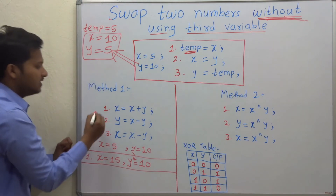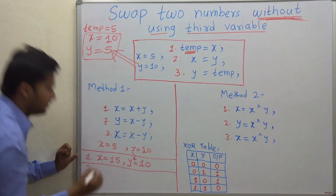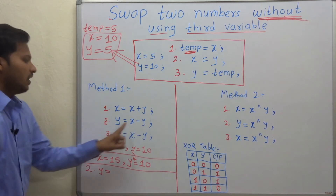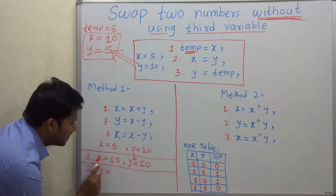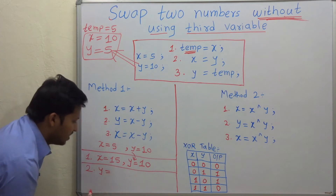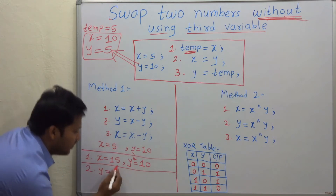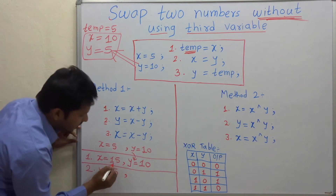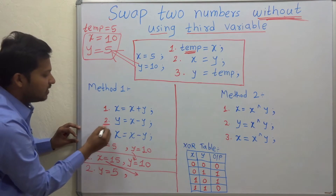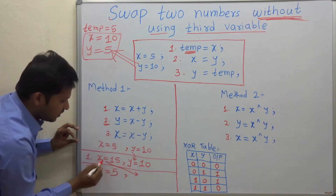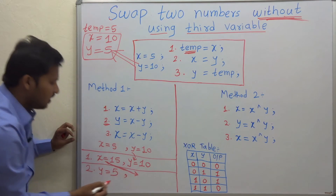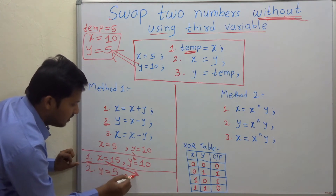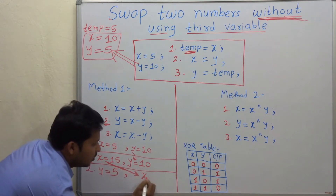Now let's execute the second statement: y is equal to x minus y. The latest values of x and y are 15 and 10 respectively. So x minus y means 15 minus 10, so the value of y is now 5. The value of x remains unchanged in the second statement — whatever was the value of x after the first statement, that value remains unchanged, and that value is 15.